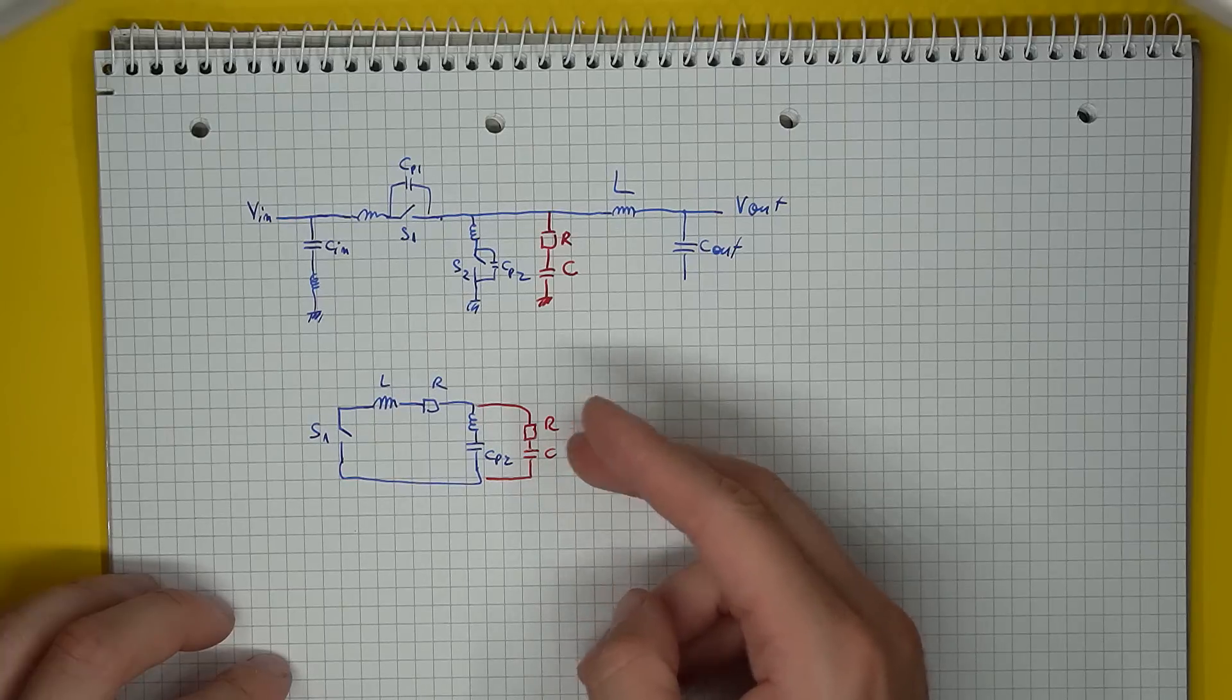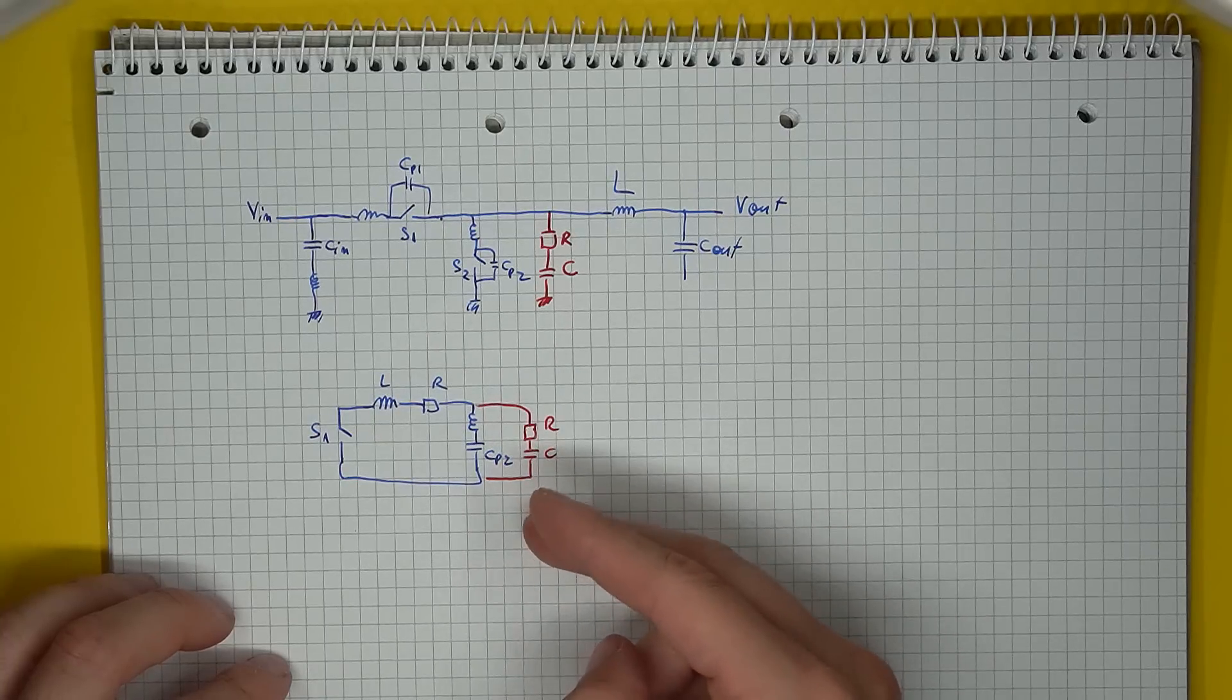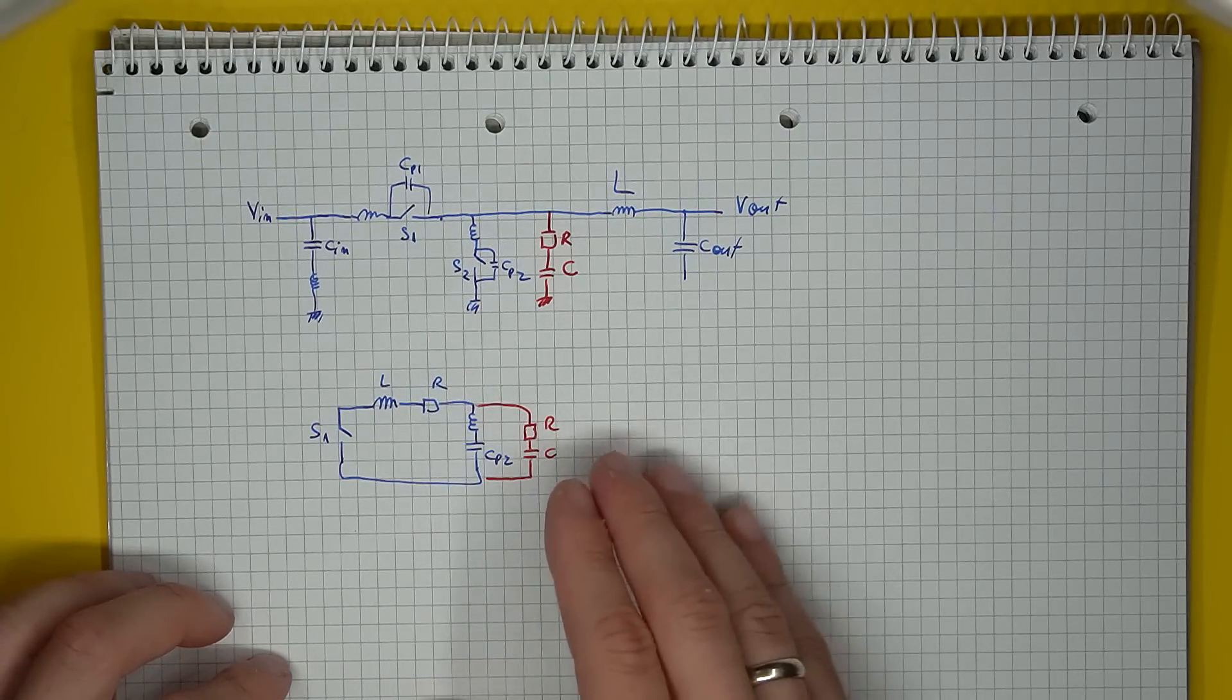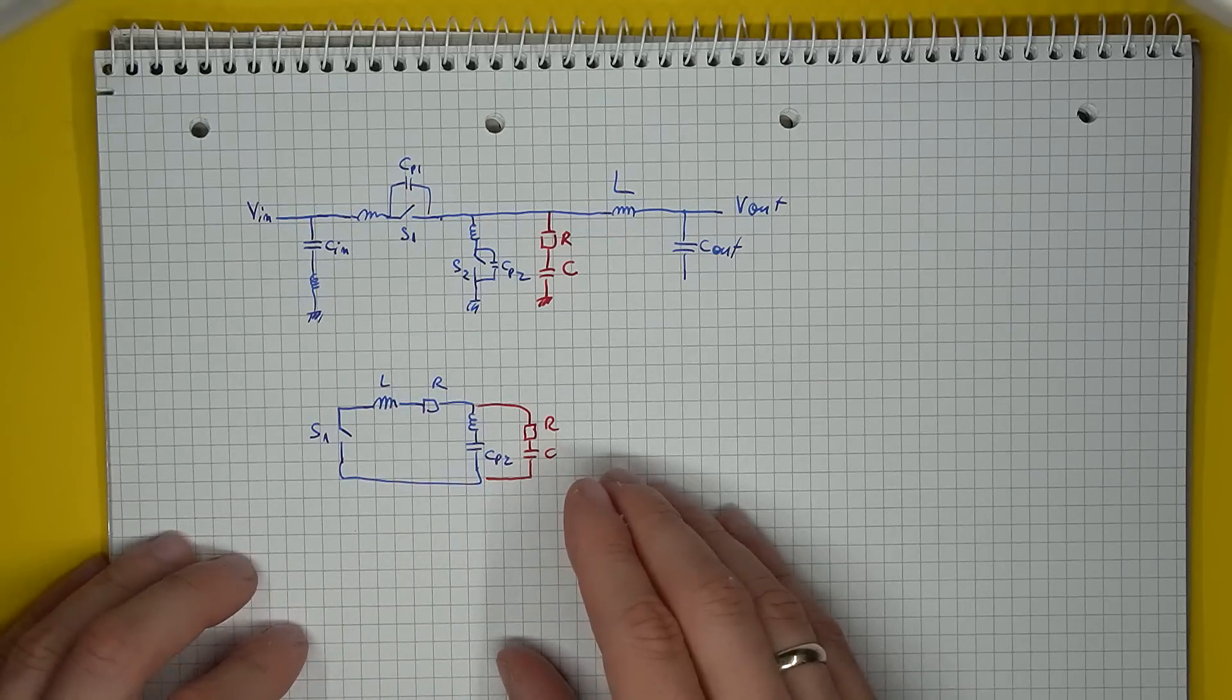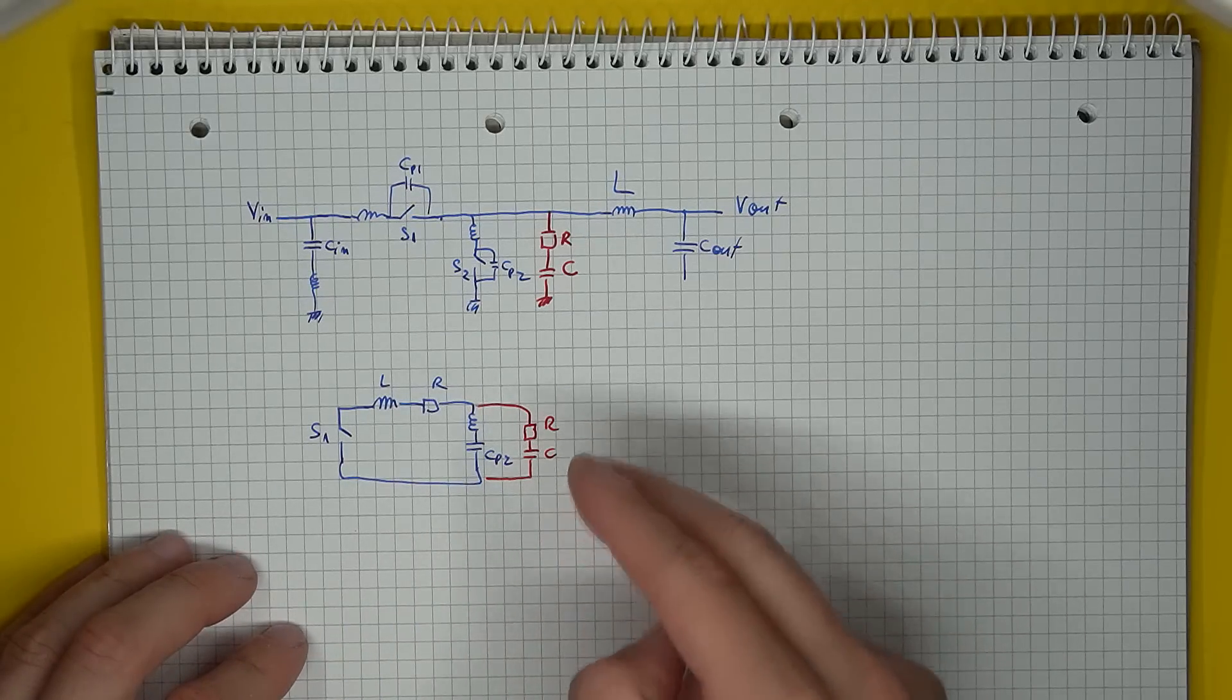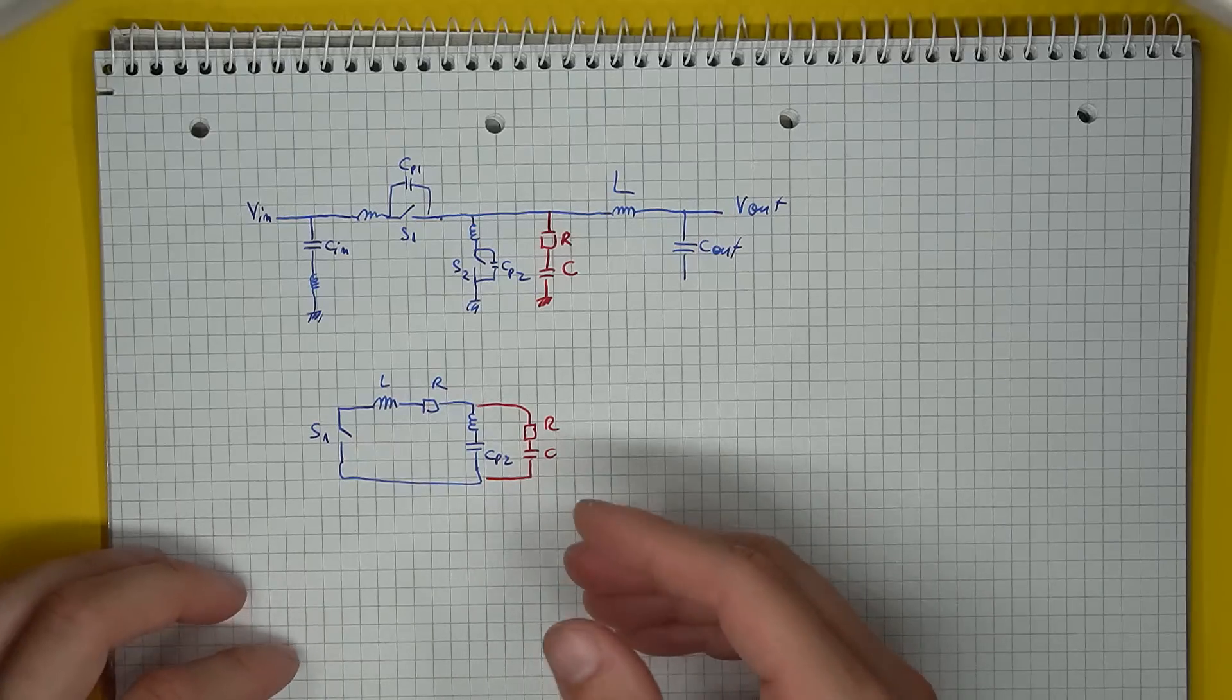So the snubber, which is in parallel with this low side capacitor, can be thought of as a set of components that changes the overall damping factor of our RLC circuit. So we're adding both capacitance and resistance to increase the damping factor.